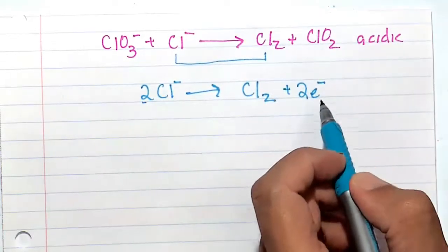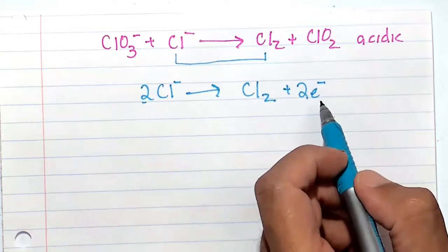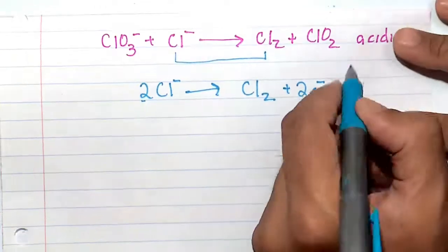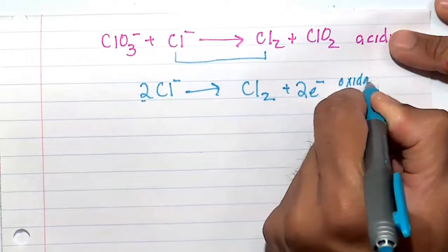And the two electrons, 2e- is minus two, and it's charge balanced. Here we lose two electrons, so this is called an oxidation half reaction.